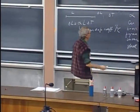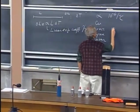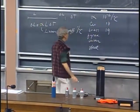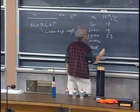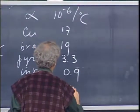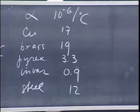Brass is about 19, copper is 17, pyrex 3.3, invar 0.9, and steel is roughly 12, but there are many different kinds of steel.